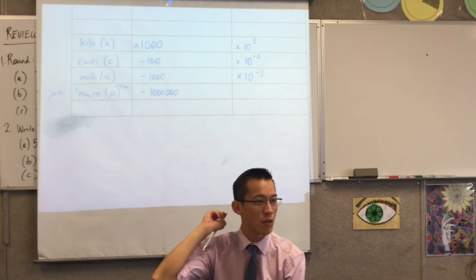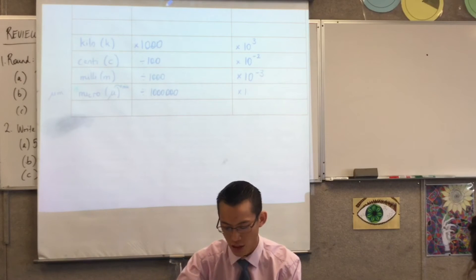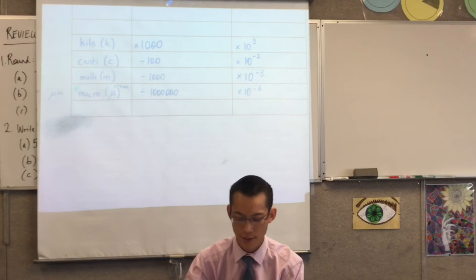So, being that how many zeros are there? Six, but you're getting smaller, so it's times 10 to the negative 6.